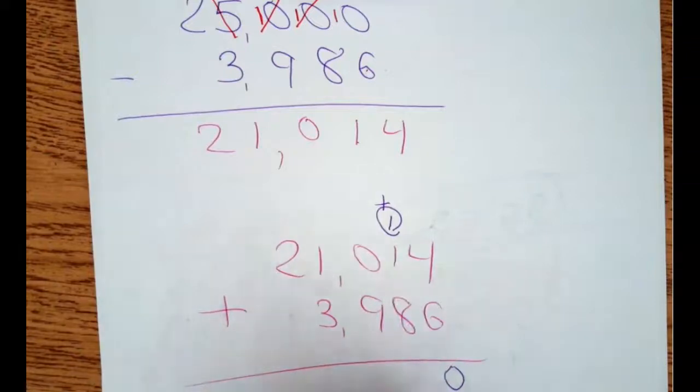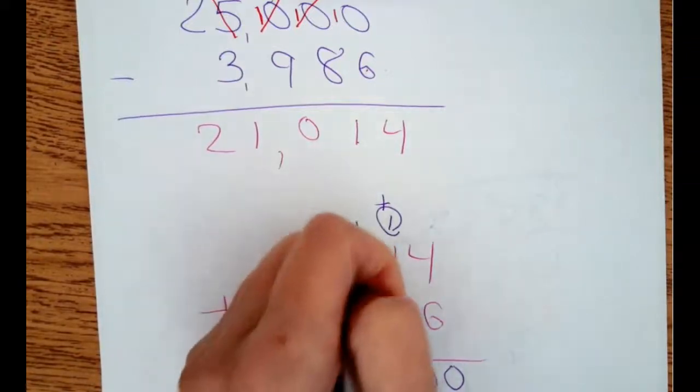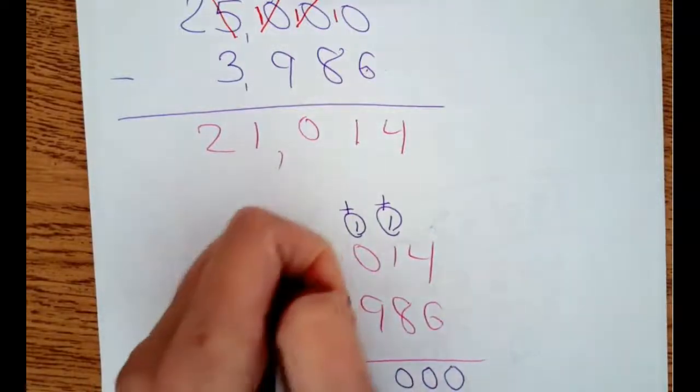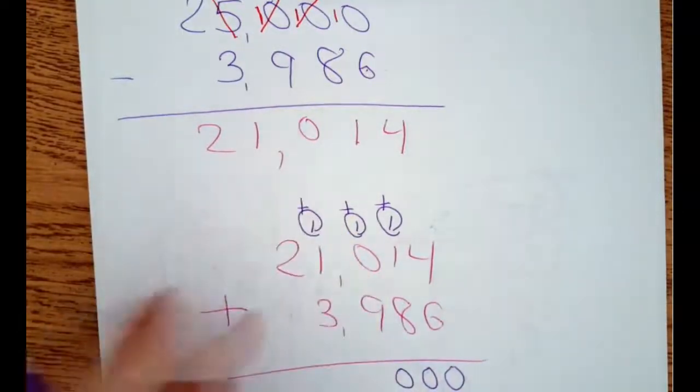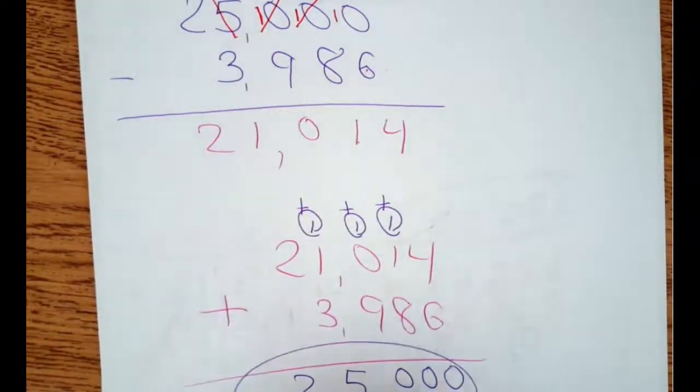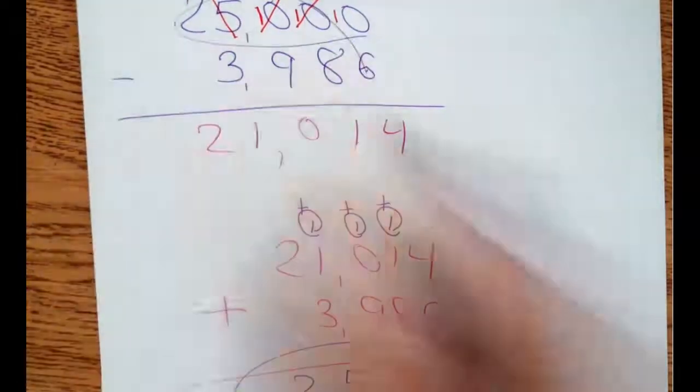One plus one plus eight is ten. Regroup the one. One plus nine is ten. Regroup the one. And then one plus one is two. Plus three is five. Two plus nothing. 25,000 is what I started with.